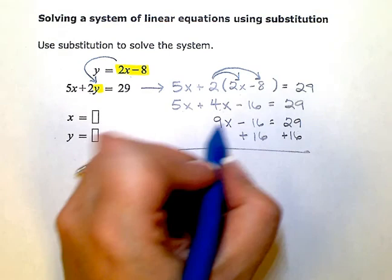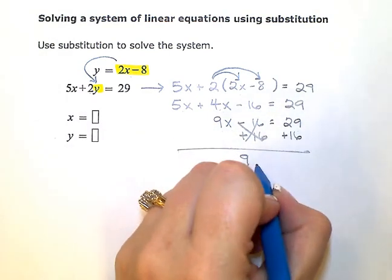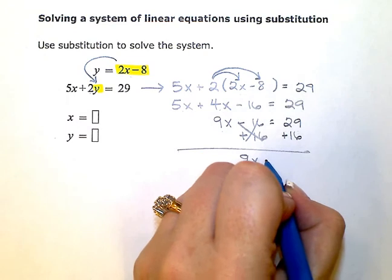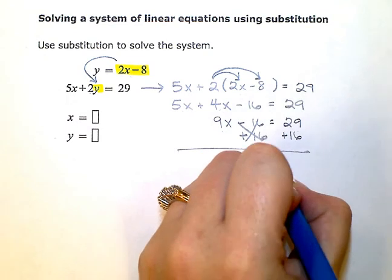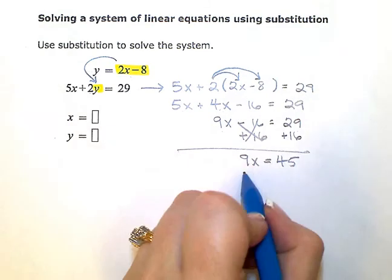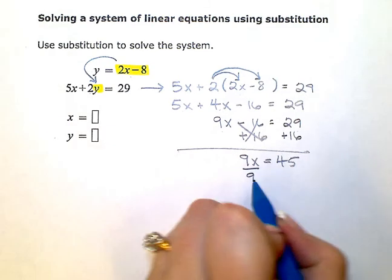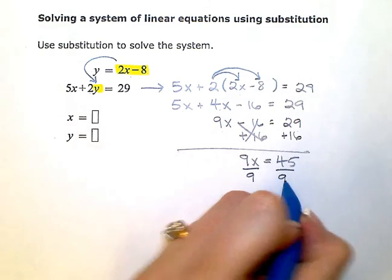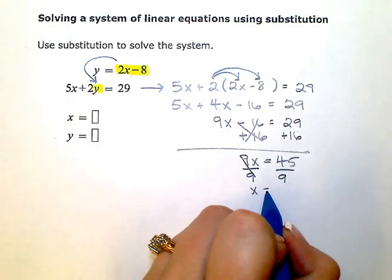Then I go ahead and simplify. That leaves me with 9x equals 45. Divide both sides by 9, and x is equal to 5.